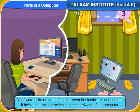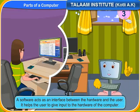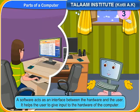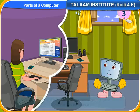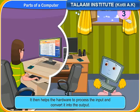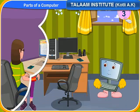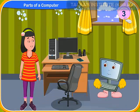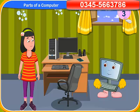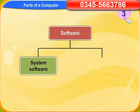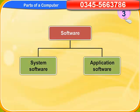A software acts as an interface between the hardware and the user. It helps the user to give input to the hardware of the computer. It then helps the hardware to process the input and convert it into the output. Are there different types of software? Yes, there are mainly two types of software. They are system software and application software.